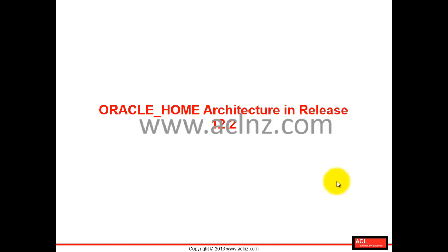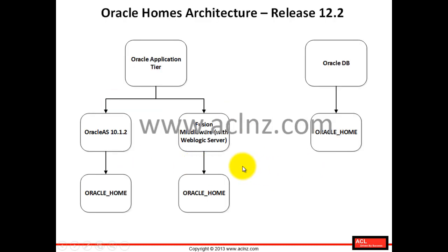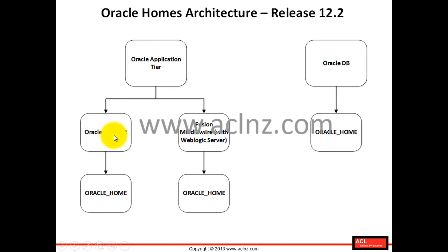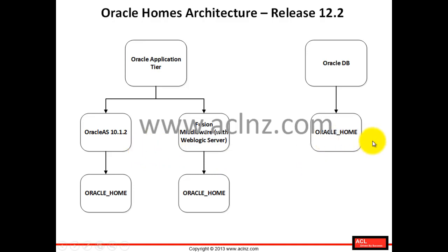Let's now understand the differentiators in release 12.2 in terms of Oracle home architecture versus release 12.1. In 12.2, you now have a new Oracle home called the Fusion Middleware Oracle home, which comes with WebLogic Server installed within it. The Oracle Application Server 10.1.2 Oracle home remains the same — it has not been replaced. The Fusion Middleware base Oracle home replaces the 10.1.3 Oracle Application Server home, while the database home remains the same but has been upgraded to 11gR2.